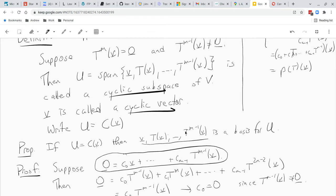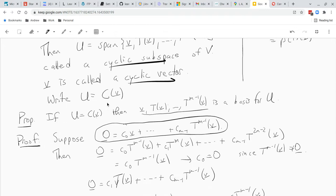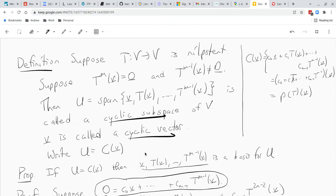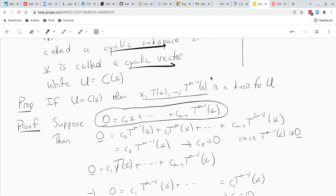The next term is c2 t to the m plus 1 of v, that's zero. All the rest are zero, the only thing that's left is c0 t to the m minus 1. Okay, so we get c0 t to the m minus 1 of v equals zero. But also our definition was that t to the m minus 1 of v is non-zero. So c0 times a non-zero vector gives you zero, that means the scalar has to be zero. Okay, so c0 equals zero.